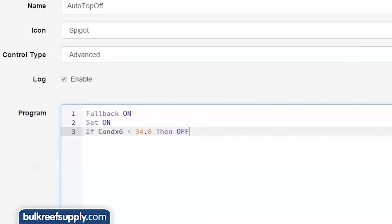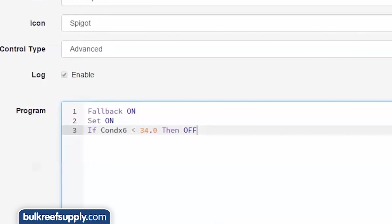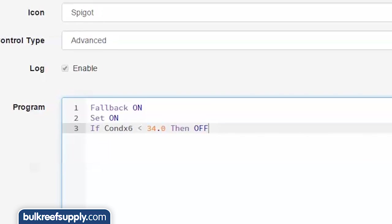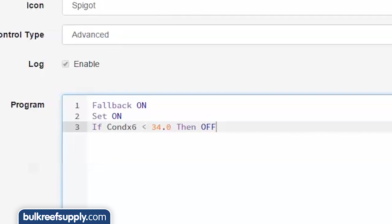Note the proper capitalization and spaces are important, and the x6 portion of the code signifies the module number of my apex assigned to the salinity module. Yours could be x4 or 5.